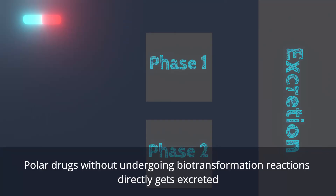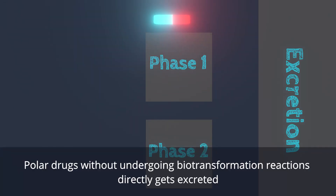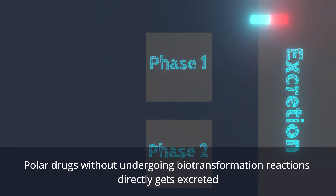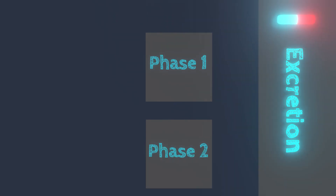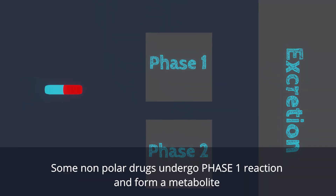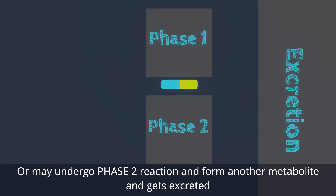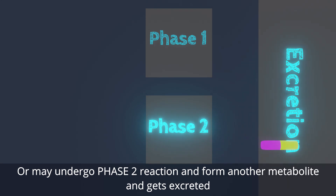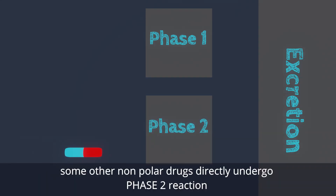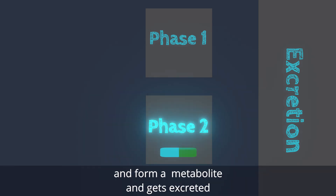Polar drugs without undergoing biotransformation reactions are directly excreted. Some nonpolar drugs undergo phase 1 reaction and form a metabolite — this metabolite may be directly excreted or may undergo phase 2 reaction and form another metabolite which gets excreted. Some other nonpolar drugs directly undergo phase 2 reactions and form a metabolite which can be excreted.